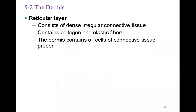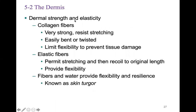Looking at dermal strength and elasticity: collagen fibers are very strong, resistant to stretching, easily bent or twisted, and limit flexibility to prevent tissue damage. Elastic fibers permit stretching and recoil to the original length, providing flexibility. The fibers and water together provide flexibility and resilience, known as skin turgor. Loss of skin turgor is caused by dehydration, aging, hormones, and UV radiation — which is why older people's skin becomes looser and less rigid.